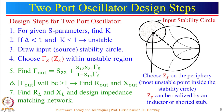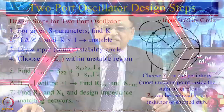If gamma_out is not greater than 1, you have made a mistake. Once gamma_out is confirmed greater than 1, find R_out and X_out — R_out must be negative. Then choose R_L smaller than the magnitude of R_out, with X_L equal to minus X_out. After that, design an impedance matching network that transforms the 50-ohm impedance to the values of R_L and X_L.